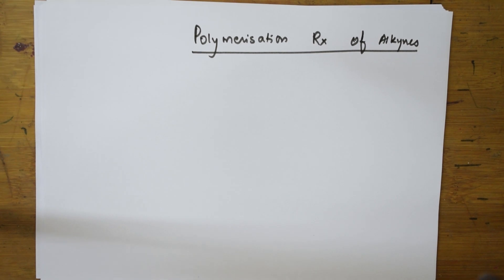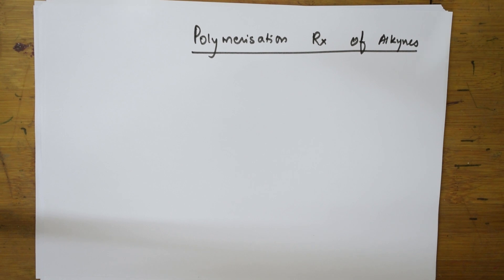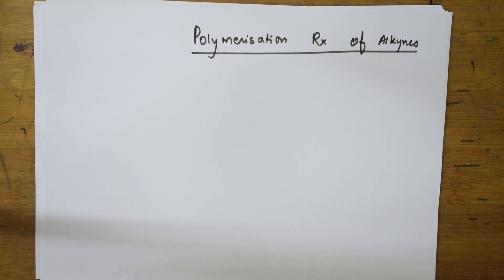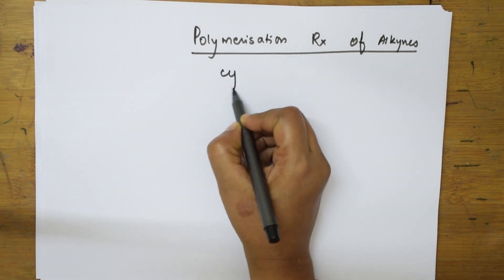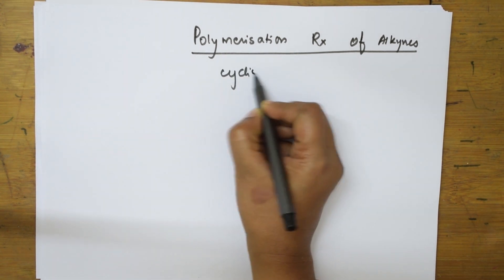Welcome back students to one more session on alkynes — the last concept of the chemical properties of alkynes. Today we will be learning the polymerization reactions of alkynes. When speaking about polymerization, there are two types: cyclic polymerization as well as linear polymerization. I will be showing you the cyclic polymerization of alkynes.